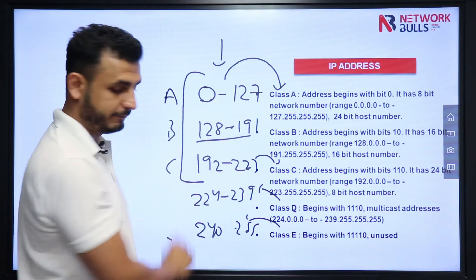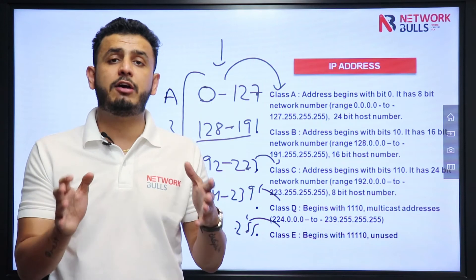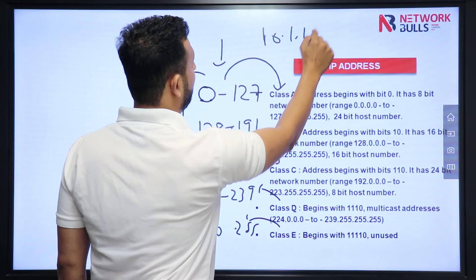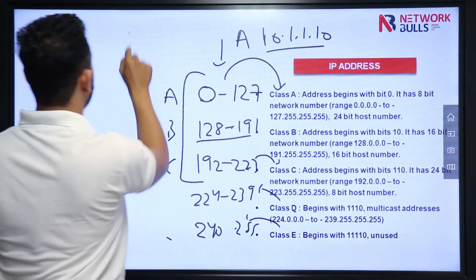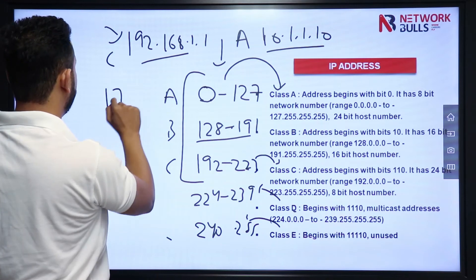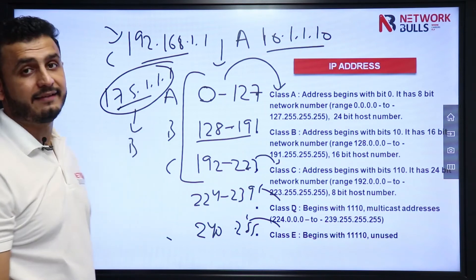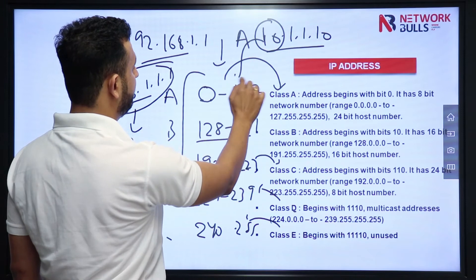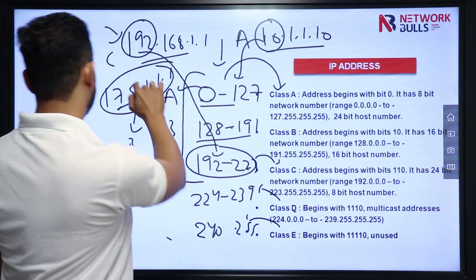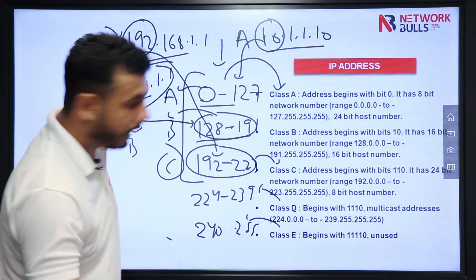Now you know how to categorize IP addresses. For example, 10.11.10.x belongs to Class A, and 192.168.1.1 belongs to Class C. The first octet value of 10 falls in the Class A range, 192 falls in the Class C range, and 175 falls in the 128–191 range, so it is Class B.